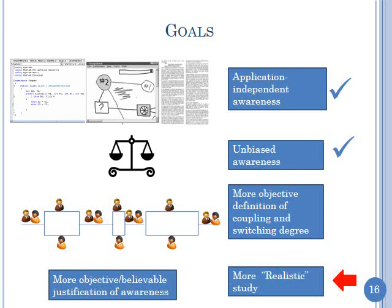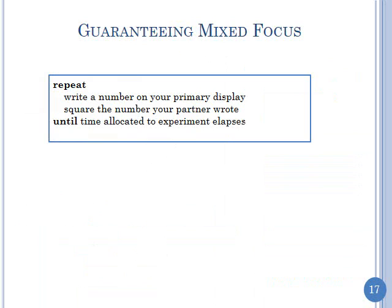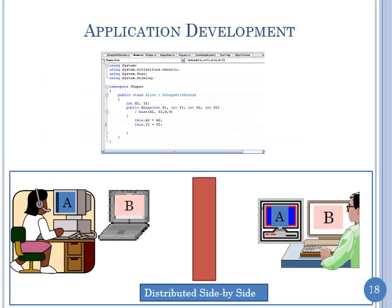Now let's look at the realistic study. Realistic is in quotes because there are different degrees of realism, but we didn't want a totally artificial study biased towards proving a point. For example, a task that forces users to write a number, then square their partner's number, would by definition guarantee mixed focus. We didn't want that. Instead, we took a software engineering task that people actually do for a living and observed where mixed focus collaboration occurred naturally.